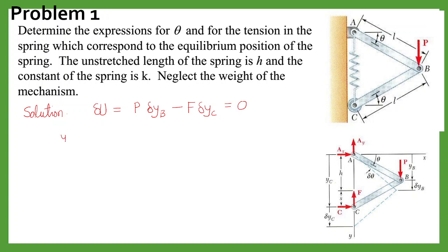Now YB, this YB will be equal to, from this triangle, L sin theta. When you differentiate it, then delta YB will be L cos theta delta theta.